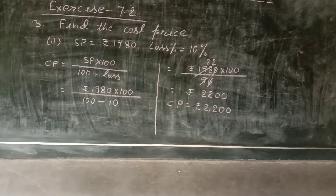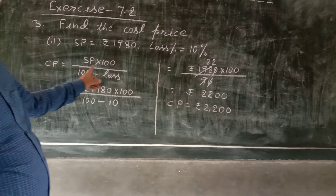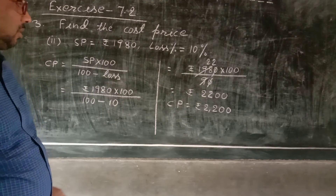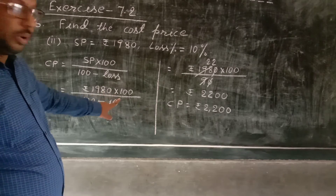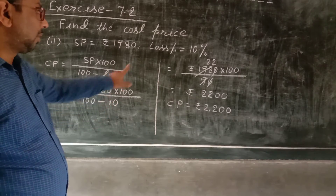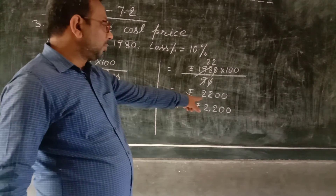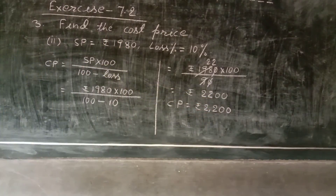Question number 3, roman number two: SP and loss are given; find CP. Using CP equals SP into 100 by (100 minus loss), with SP = 1980 and loss = 10%, we get 1980 into 100 by 90. Calculating this, CP equals Rs. 2,200.